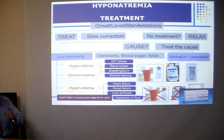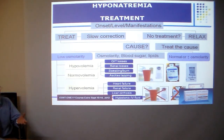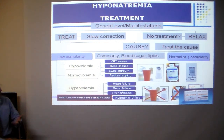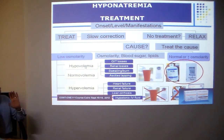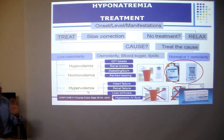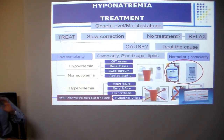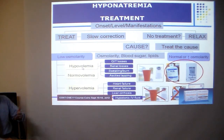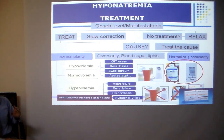In resistant patients, vasopressin receptor antagonists may be used in some cases of SIADH or liver cirrhosis, though this is not currently available in Egypt. Treatment of hypovolemic hyponatremia is completely different from that of hypervolemic patients such as those with liver cirrhosis or heart failure, compared to patients with diarrhea and vomiting.